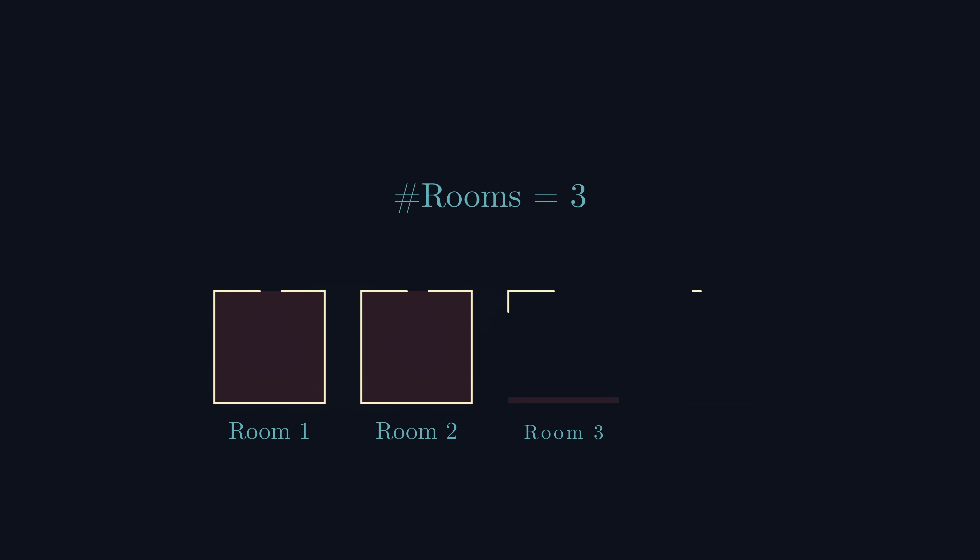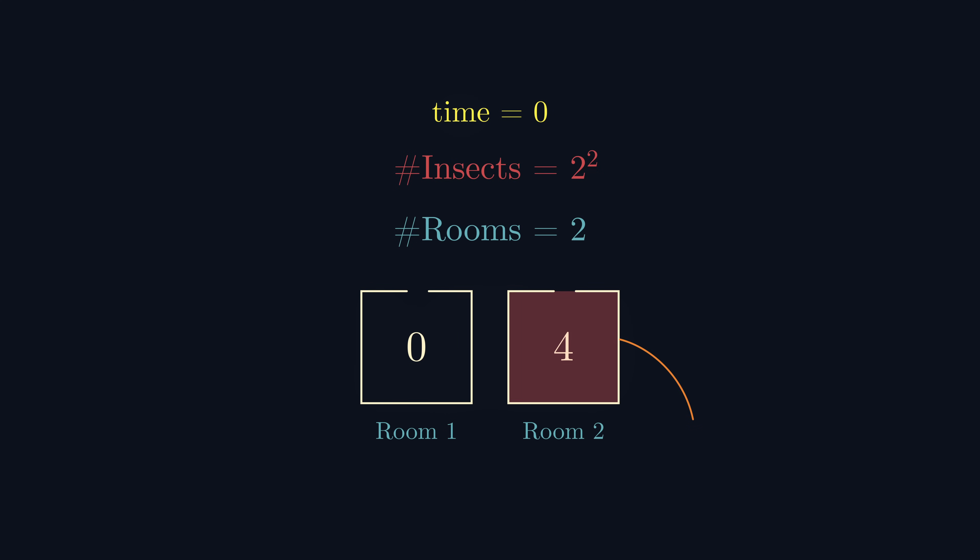If we step it down to two rooms and two squared insects, then there are three possible initial starting configurations. We could have zero insects in one room and four in the other, but here there is no other room with at least four insects, so none of the insects can move.